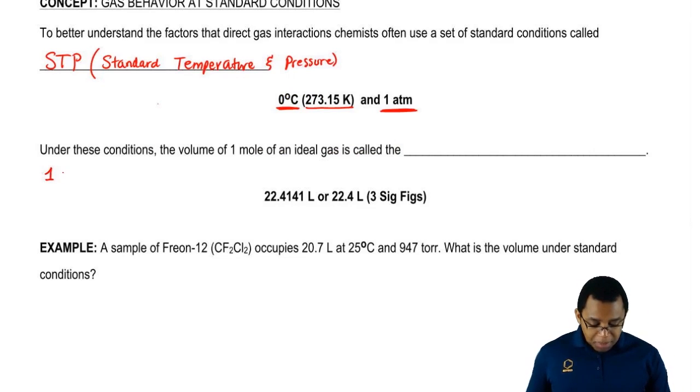At STP, one mole of carbon dioxide, one mole of nitrogen gas, or one mole of helium gas—all of these gases look different. Some of them are just atoms by themselves, others are different elements connected together.